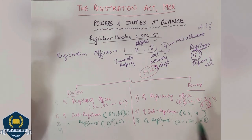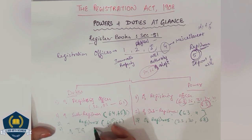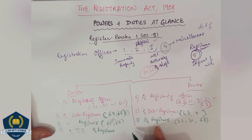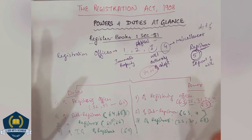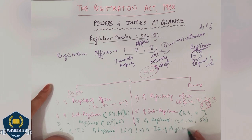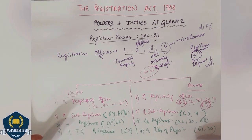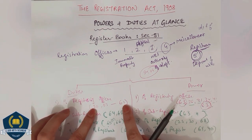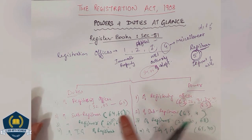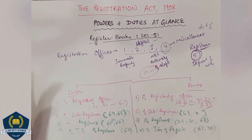One more important division: among registering officers, we also have the inspector general. So the duties of the inspector general of registration are covered under section 69 — a single section. And the powers of the inspector general of registration are covered under sections 69 and 70. So the full map is: sections 52 to 61, then 63 and 83, then 64 and 65, then 65 and 66, then 68, and finally 69 and 70.